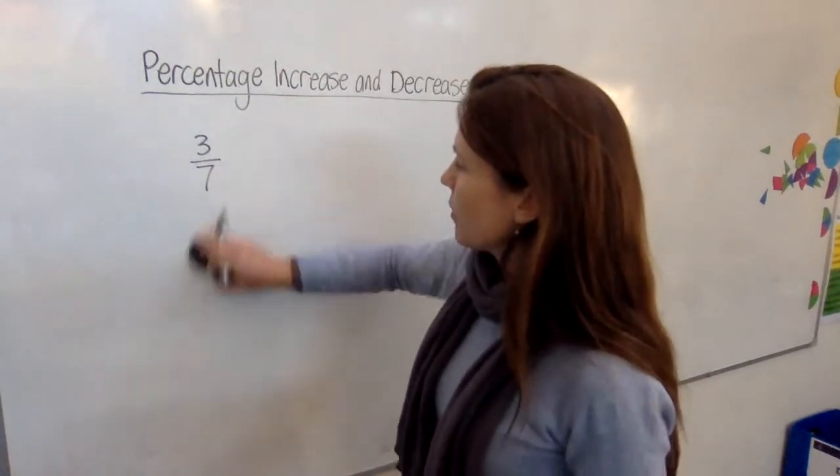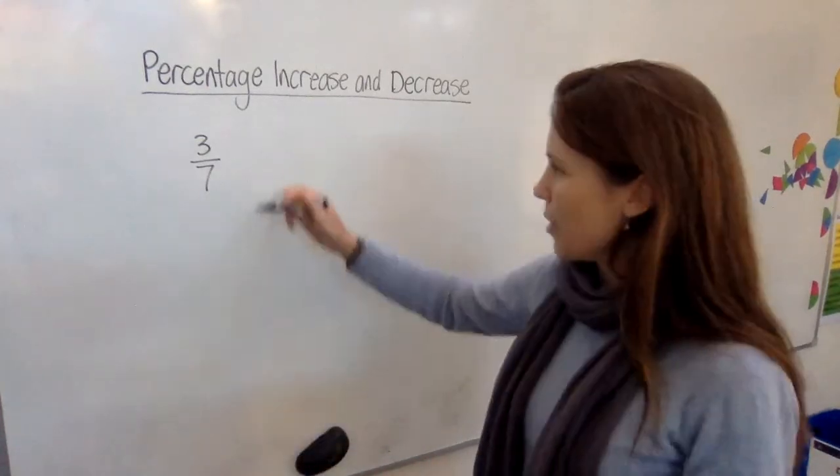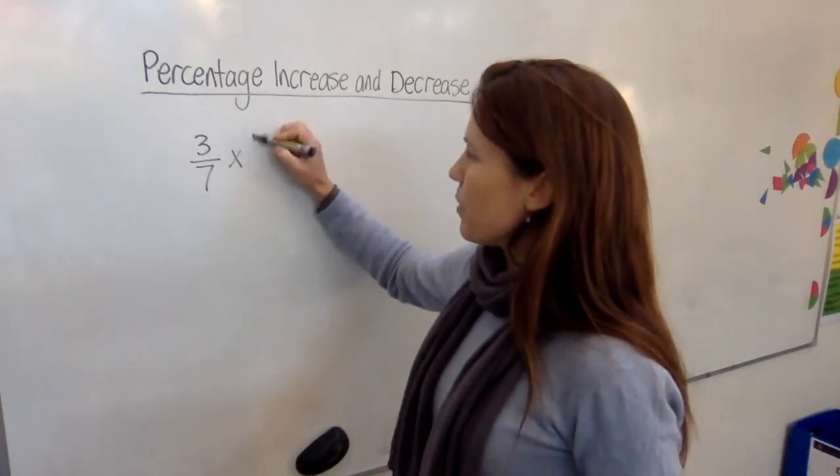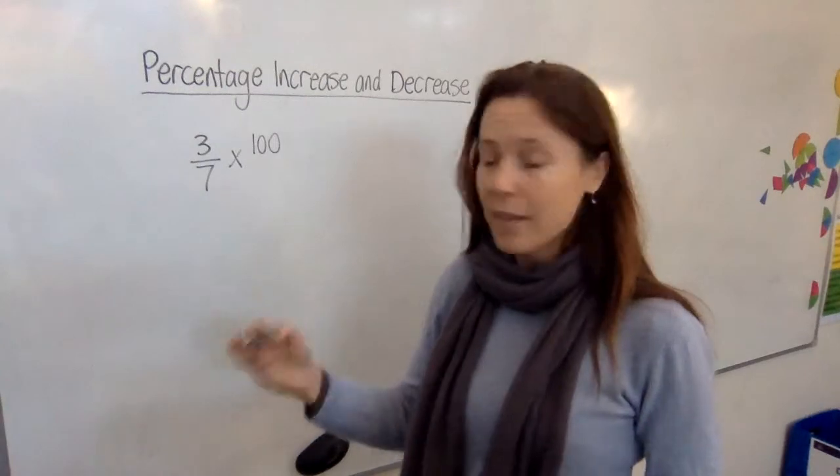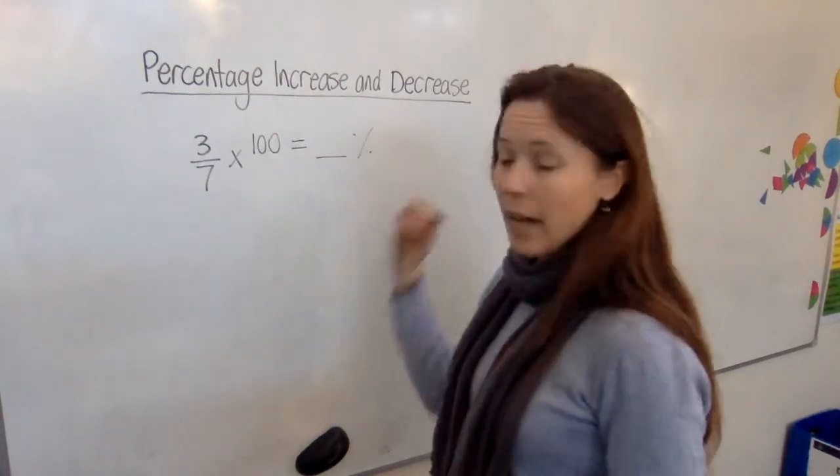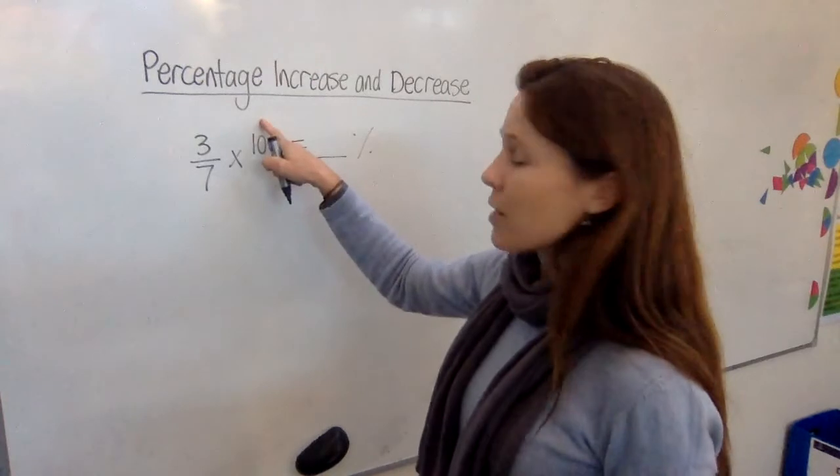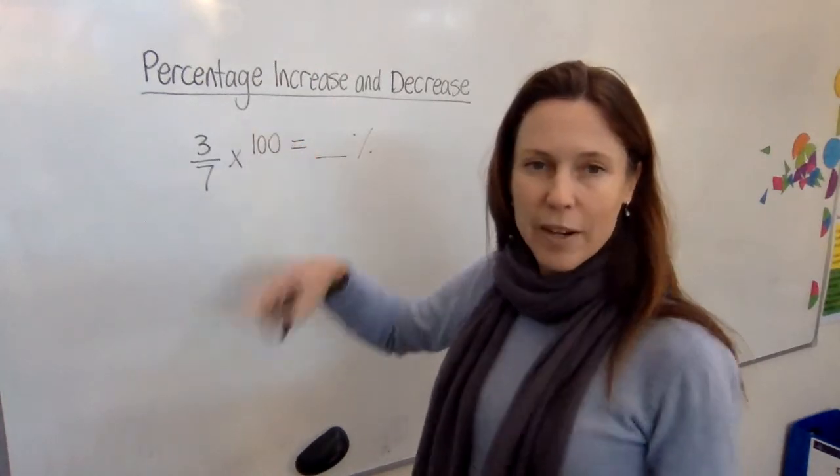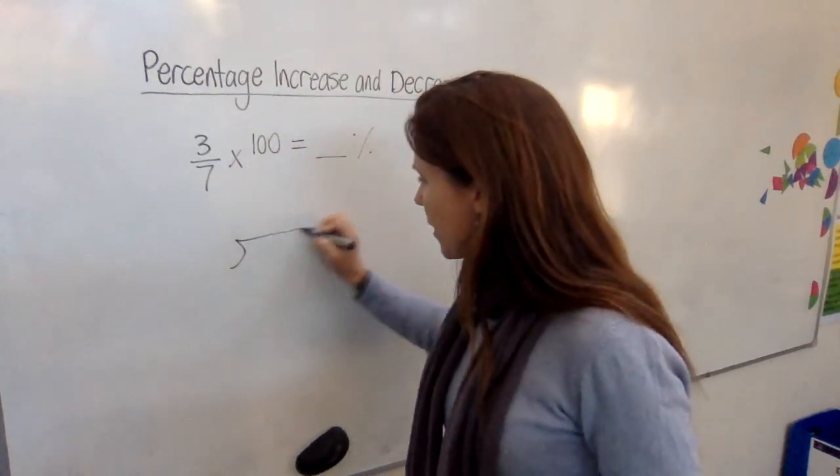So, with a tricky one, if you're only going to learn one method, a method that works well for everything, would just be to say multiply the thing by 100, that will be the percentage that you have. So three times 100 is 300. What's 300 divided by seven? Well, let's find out.